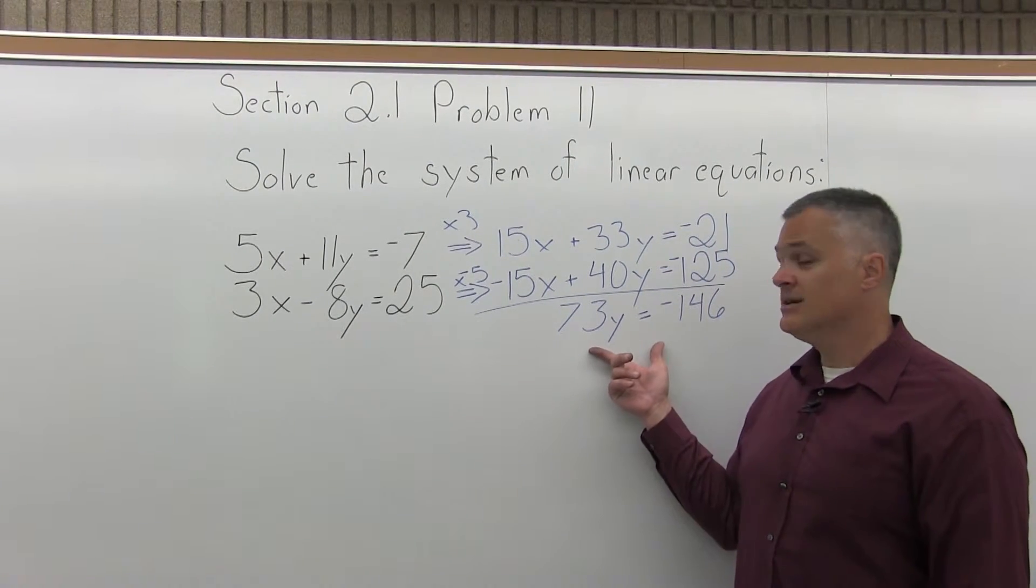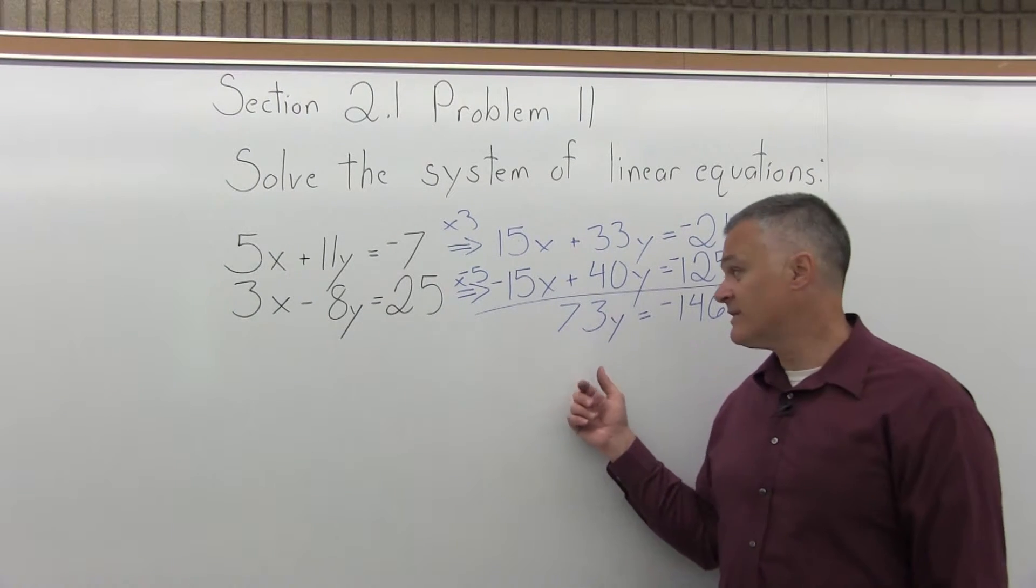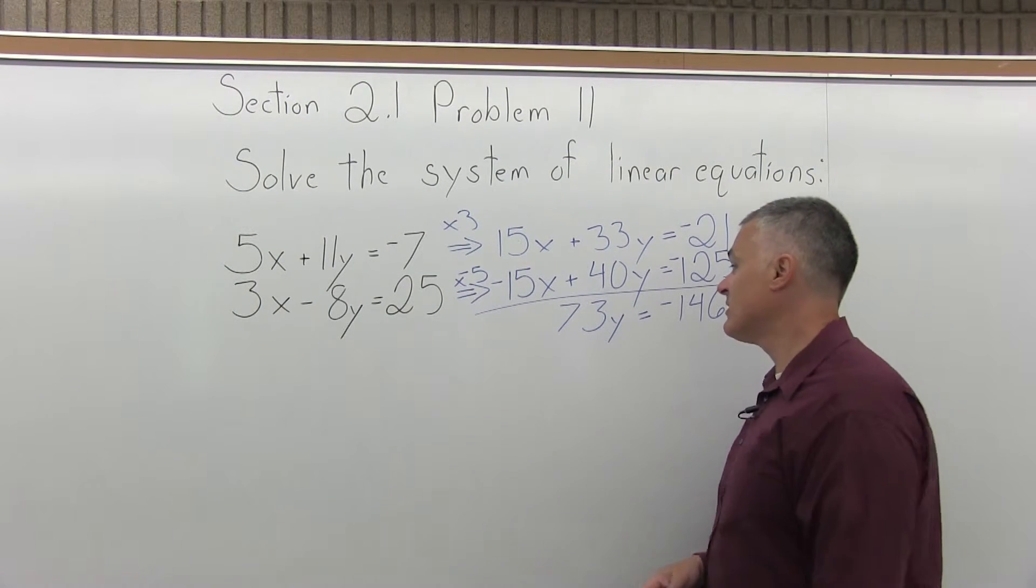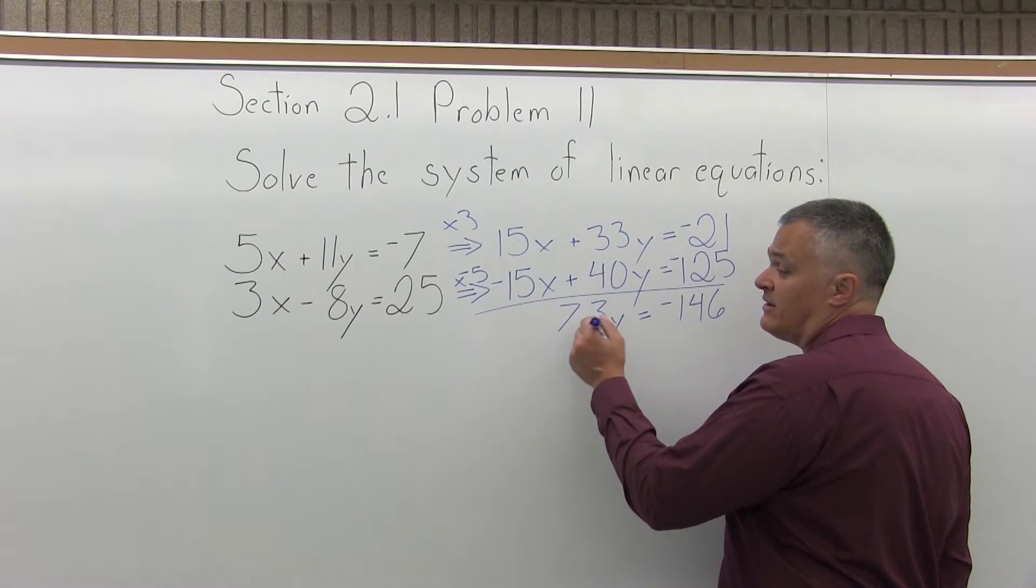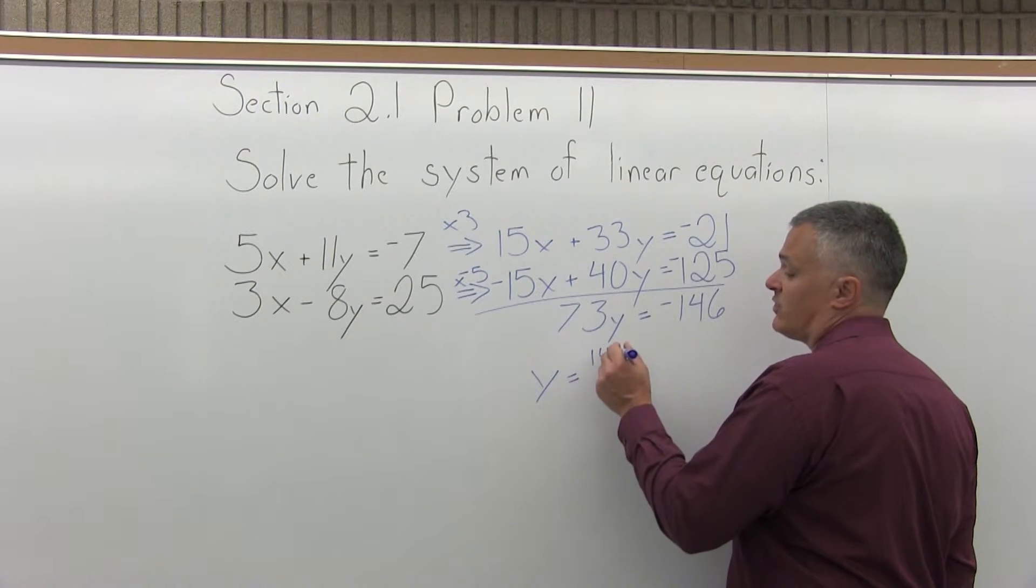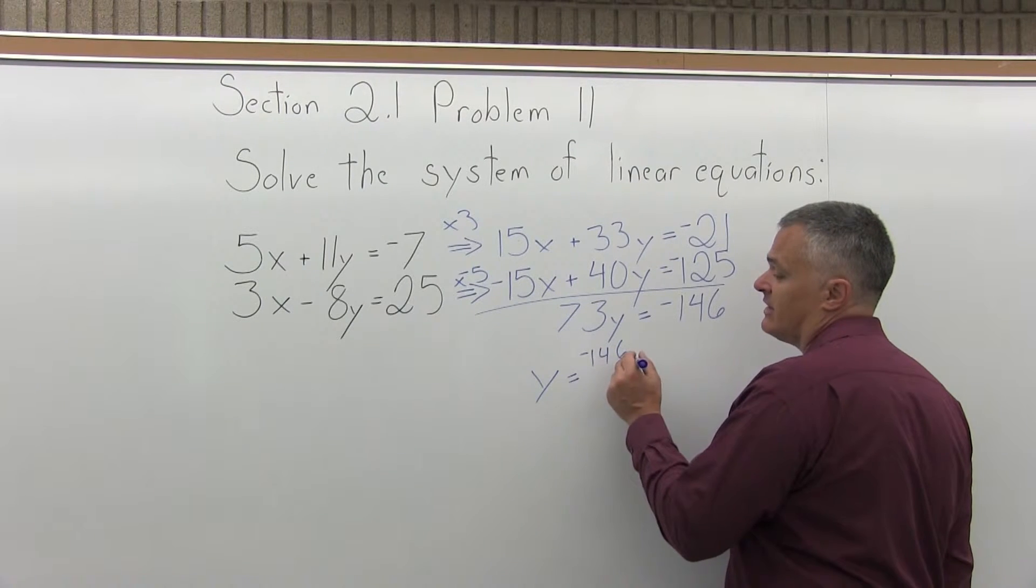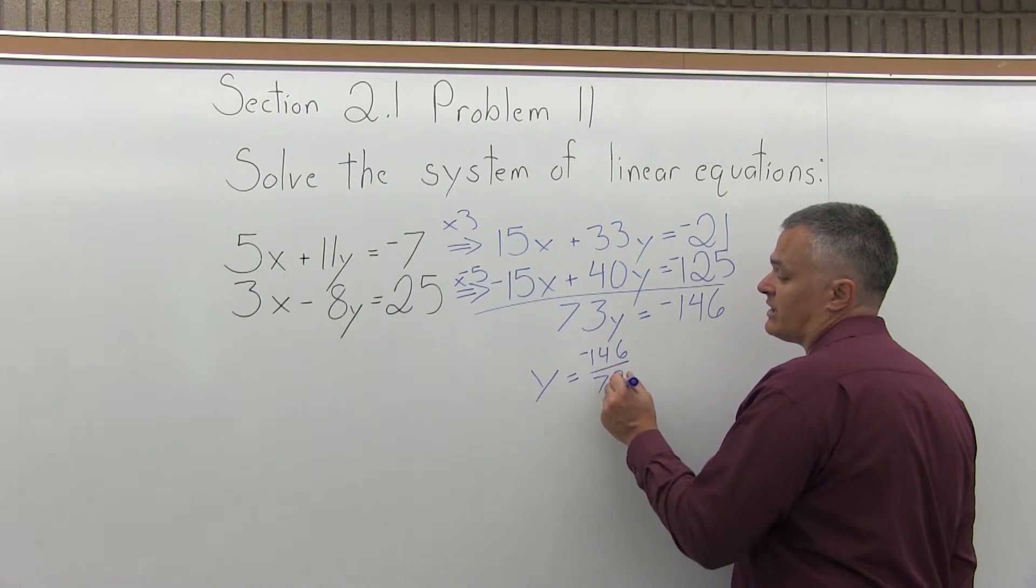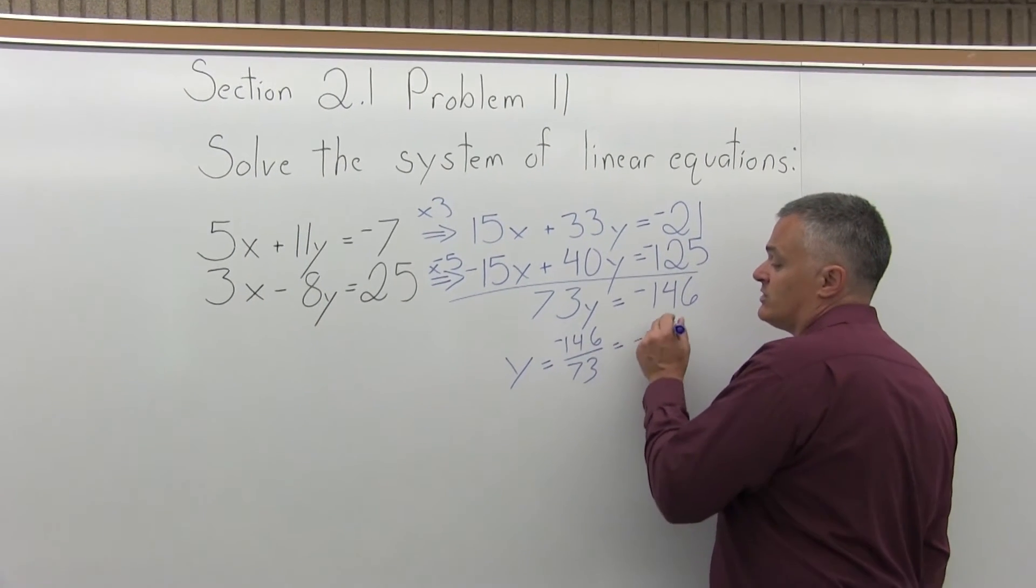Step 3 is solve for the remaining variable. So, I have 73y equals negative 146. Divide out the 73. So y equals negative 146 divided by 73, and that will reduce to negative 2.